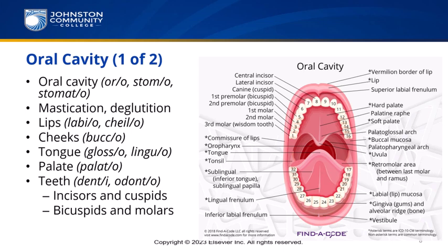Be careful — stomo and stomato refer to the mouth, not the stomach. Our word part for stomach is gastro. The incisors and cuspids are teeth located in the anterior of the mouth, while bicuspids and molars are located posteriorly. Incisors and cuspids tear and break apart food, while bicuspids and molars masticate — chew — food. The word part cuspo refers to a point: cuspids have one point, bicuspids have two.